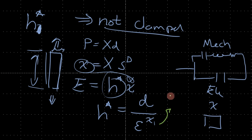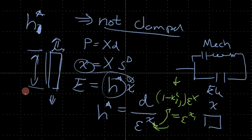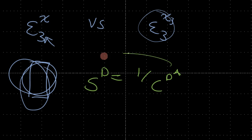For the K33 mode, the permittivity in one direction equals 1 minus K33 squared, multiplied by the free stress permittivity. And the effective S_D is simply 1 over the effective C_D star.